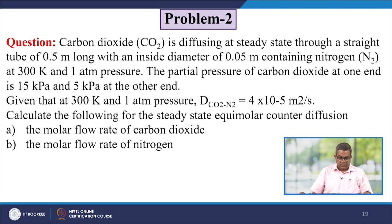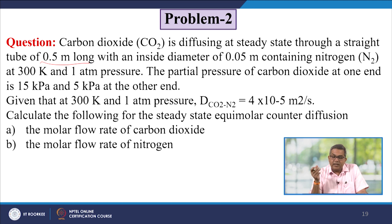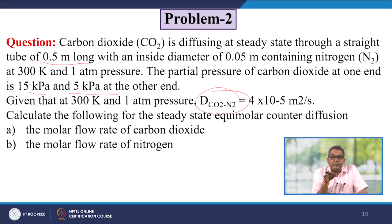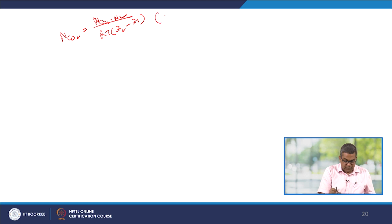Now let us take up another problem: carbon dioxide is diffusing at steady state through a straight tube of 0.5 m long with an inside diameter of 0.05 m containing nitrogen at 300 K and 1 atm pressure. The partial pressure of CO2 at one end is 15 kPa and 5 kPa at the other end. We need to calculate the molar flow rate of CO2 and nitrogen for steady state equimolar counter diffusion. Assuming ideal gas: NCO2 equals (DCO2·N2/(RT·(x2−x1)))·(pCO21 − pCO22).